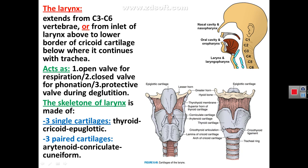The skeleton of the larynx is made of three single cartilages — the thyroid, cricoid, and epiglottic cartilages — and three paired cartilages: the arytenoid cartilages above the back of the cricoid, the corniculate cartilages above the arytenoids, and the cuneiform cartilages lying in the aryepiglottic fold.